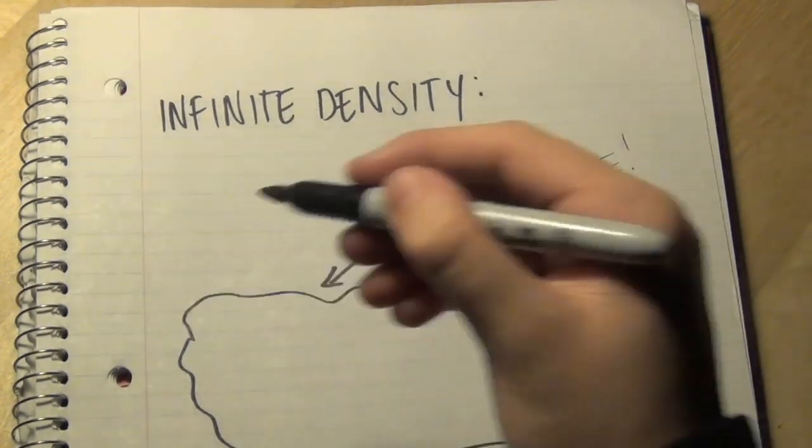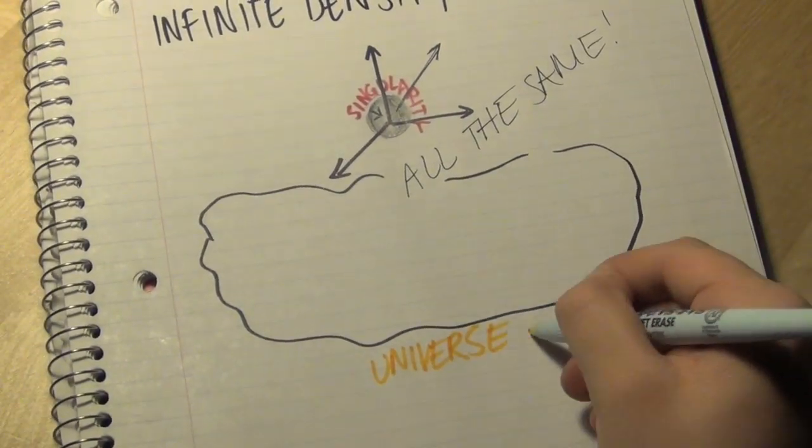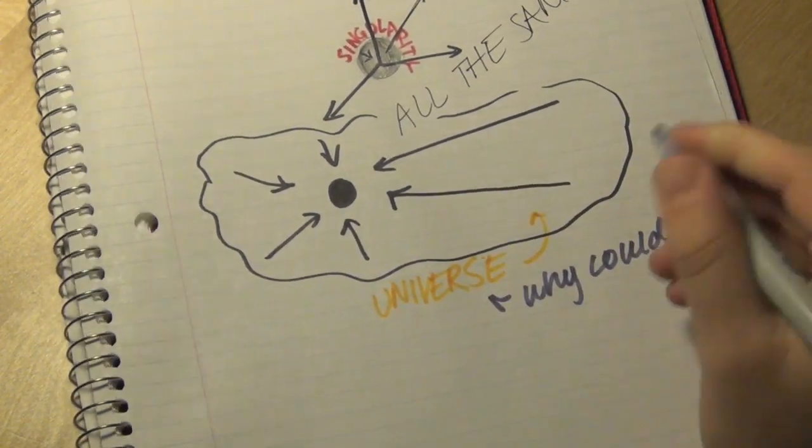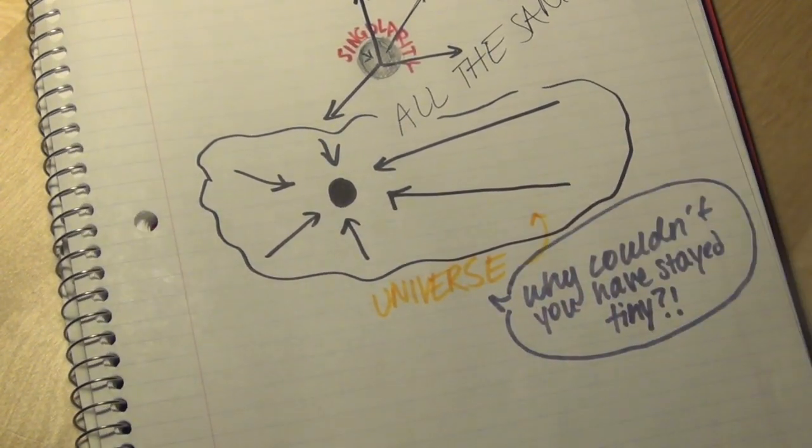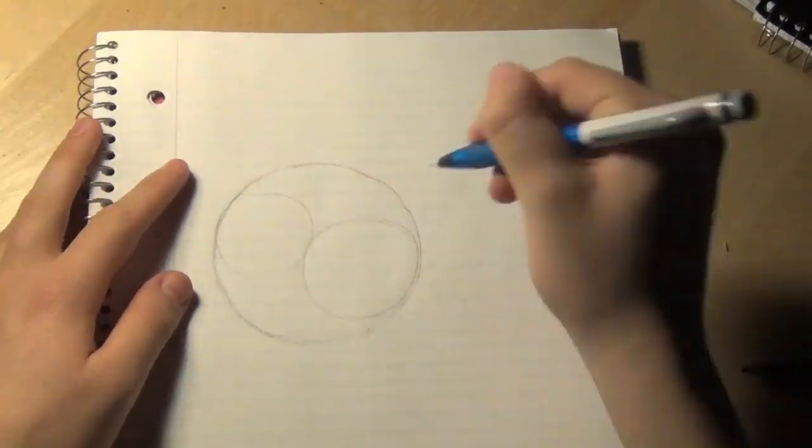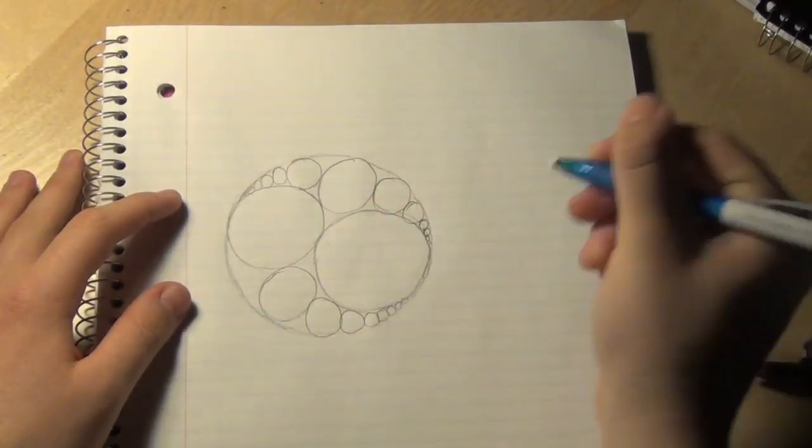So maybe it's a good thing that the singularity is infinitesimally small, because if it were any bigger, its gravitational attraction would compound the entire universe into itself. It also means that you can keep adding mass to it, but it doesn't actually become more massive. Sort of like how infinity is the same as infinity plus one, or two, or even a million.